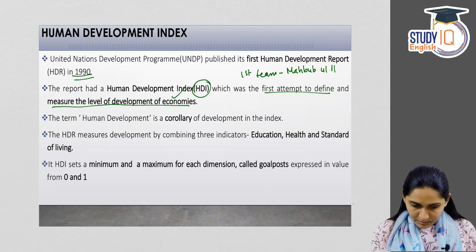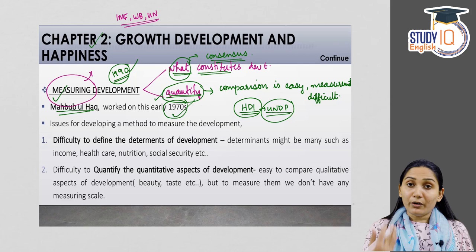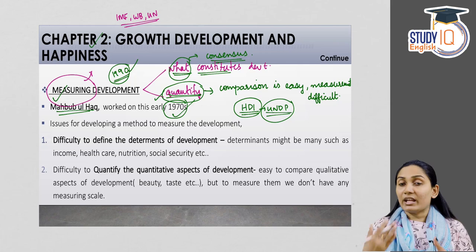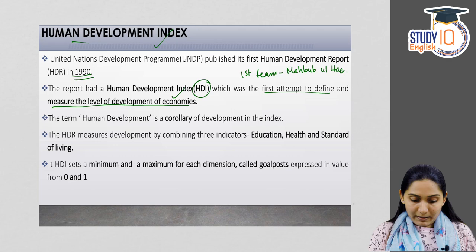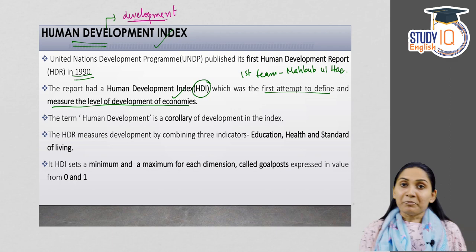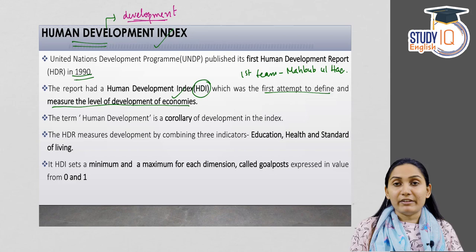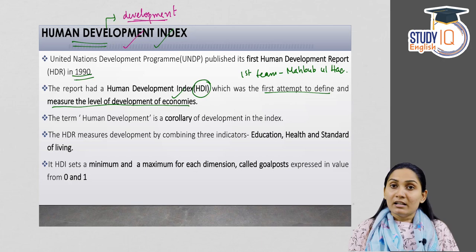Mahbub ul Haq is a leading Pakistani economist who also worked on defining development back in the 1970s, so his contributions even before the HDR were very significant. He led the team for the first Human Development Report. In the HDR, the term 'human development' is used as a corollary to development — they mean the same thing — because an economy is considered developed only if the people living in it are developed. If there is progress for the people, the economy is considered developed.